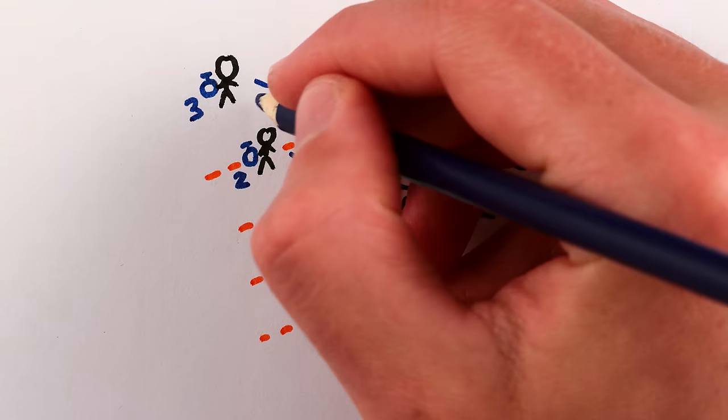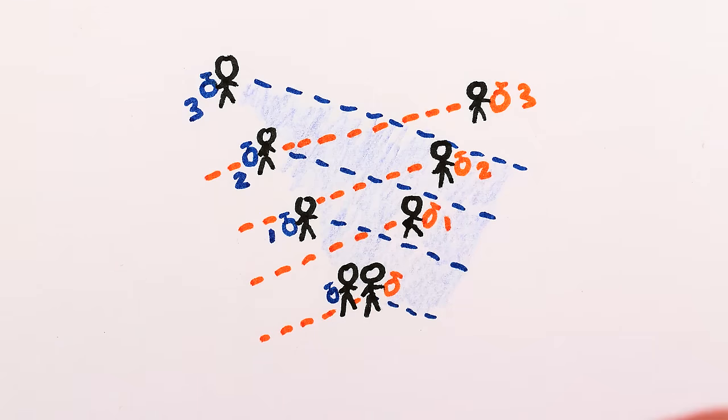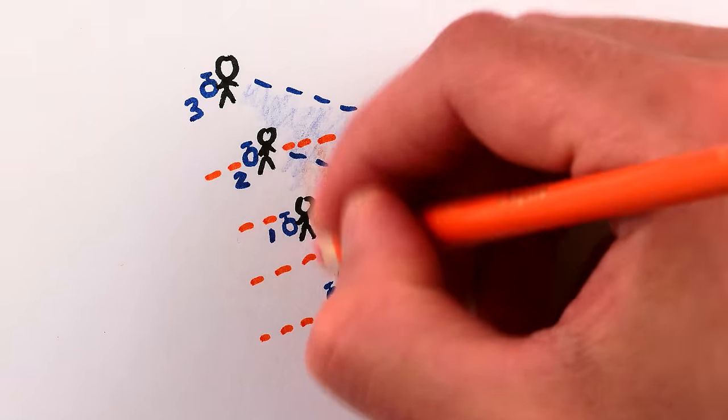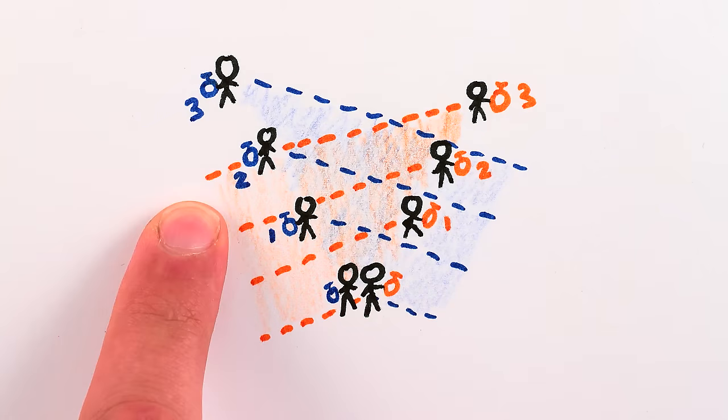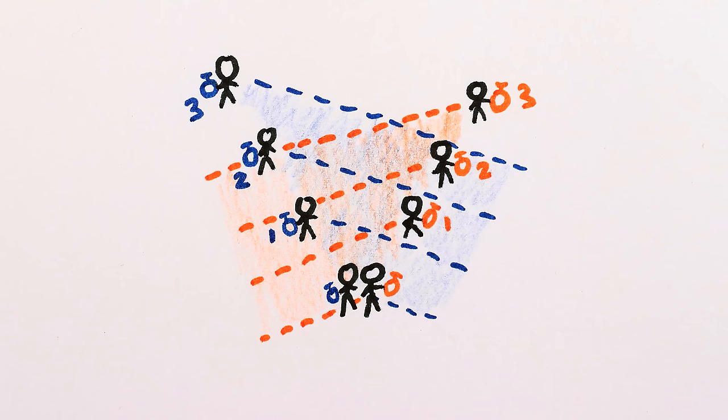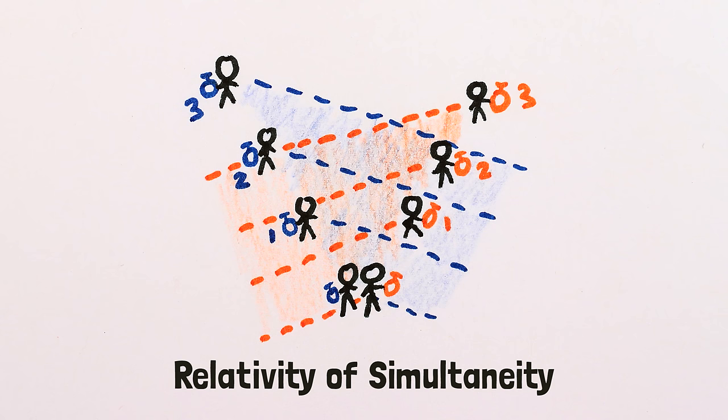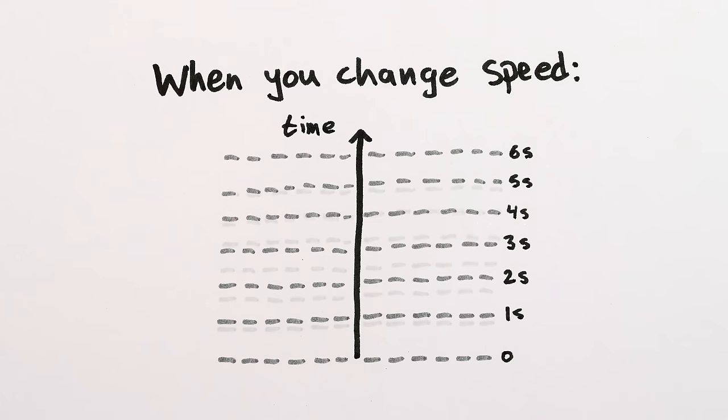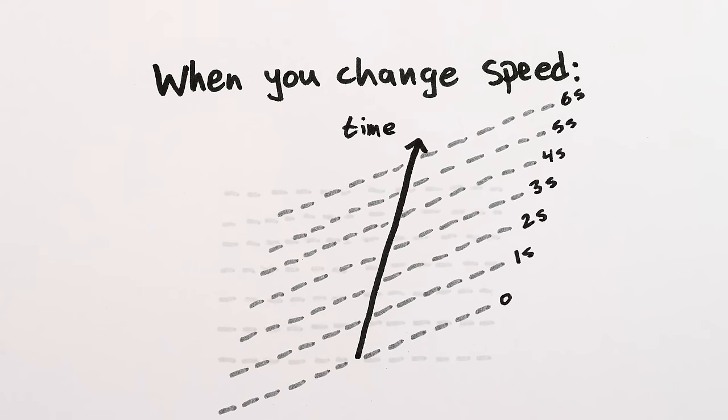So when 3 seconds have passed on my clock, I'll measure only 2 seconds have passed for you. And yet when 3 seconds have passed on your clock, you'll measure only 2 seconds having passed for me. So we each think the other is measuring distances in time as shorter. But it's not a contradiction, it's just how time behaves when it's rotated. It affects not just the passage of time, but also our notion of the same time.